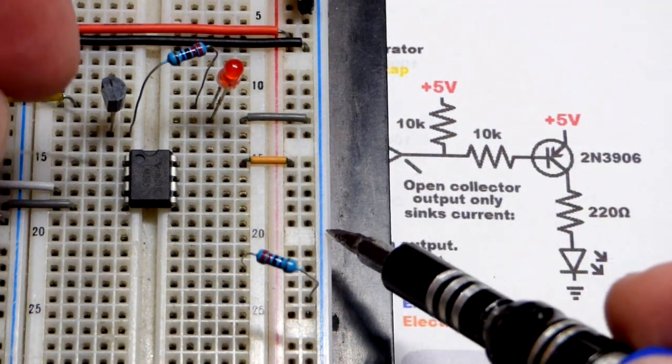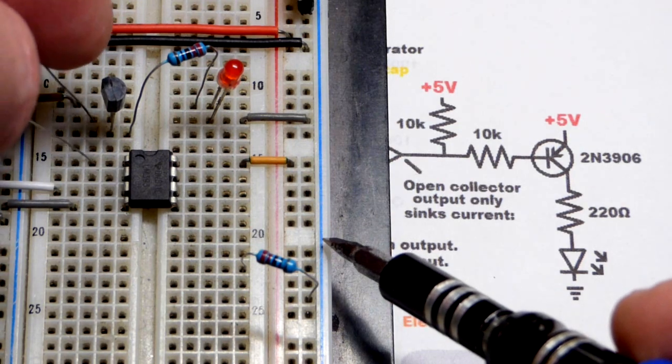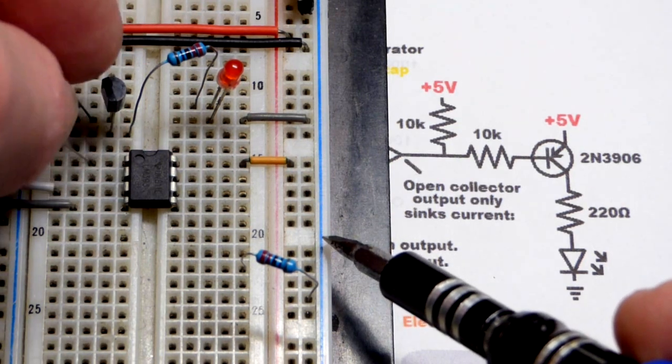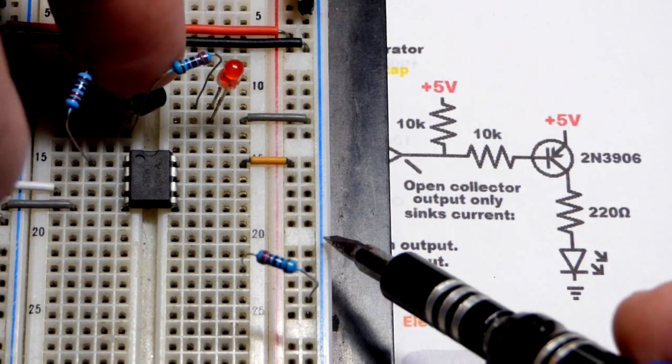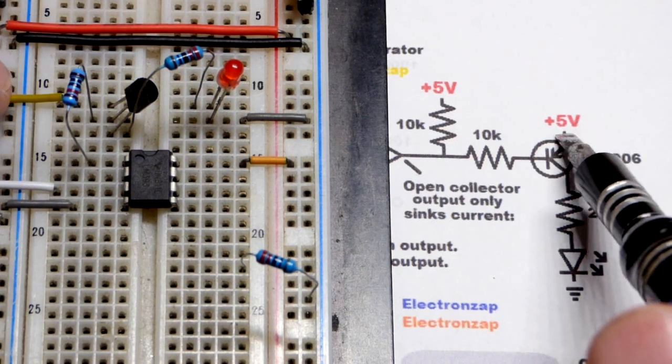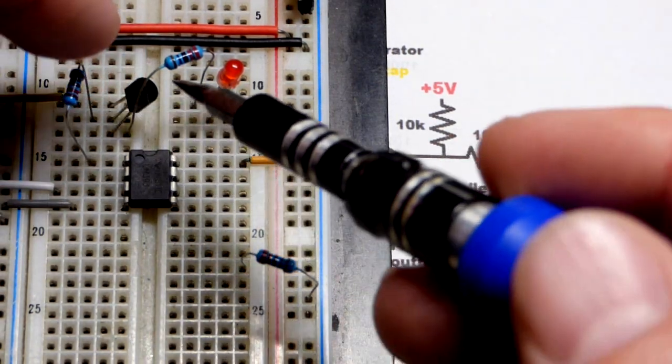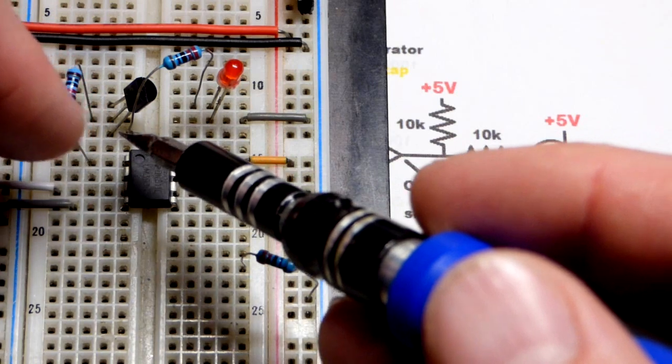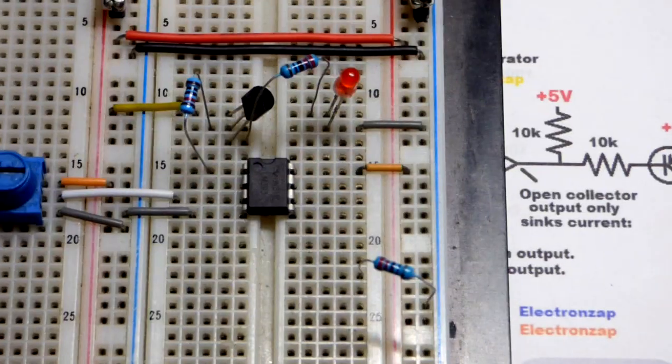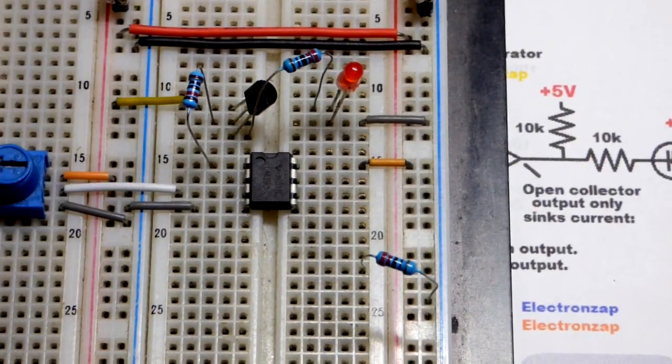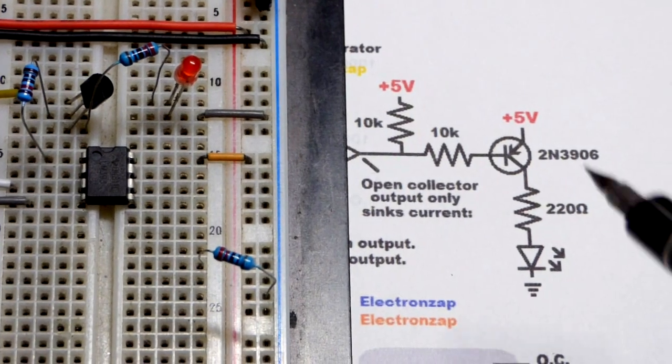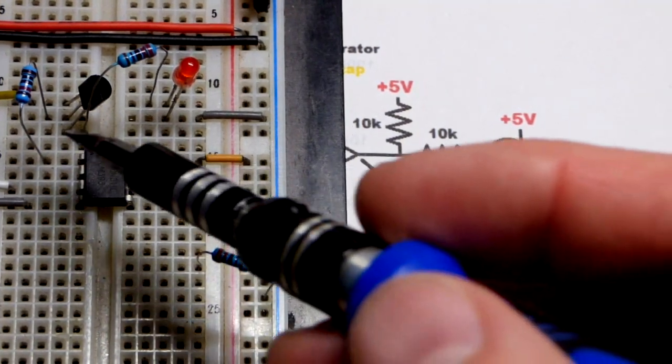So we're going to take a 10,000 ohm resistor, put it to the base of the PNP bipolar junction transistor. You can see that the emitter on top there, so the flat side's to the left, emitter on top, base in the middle, and collector at the bottom, is to the positive supply. Pretty standard way to wire up a PNP bipolar junction transistor.